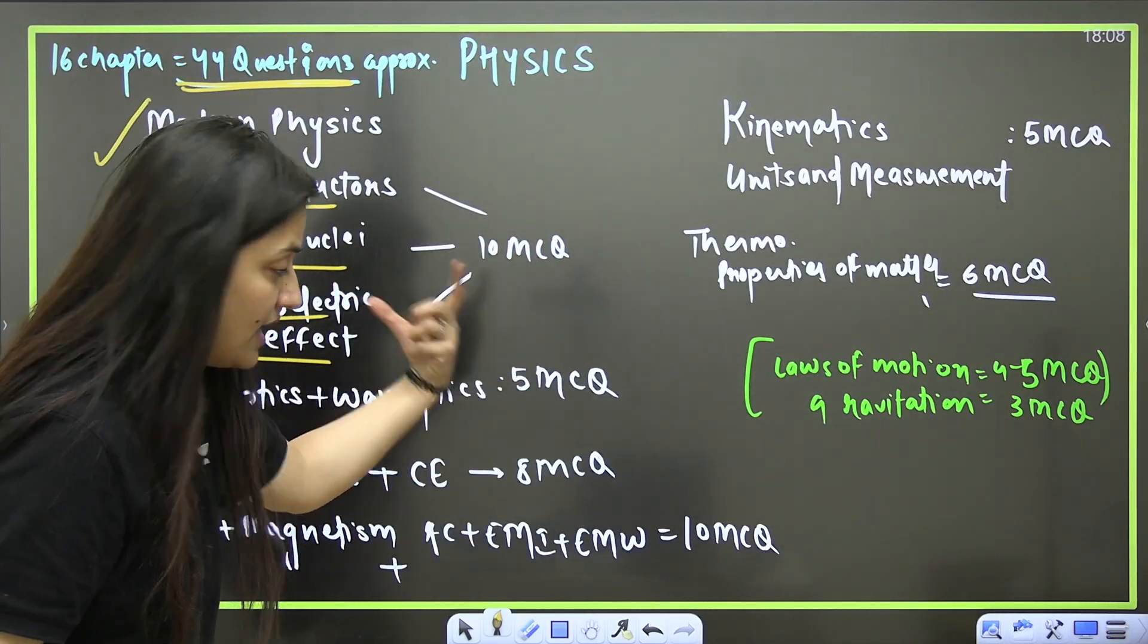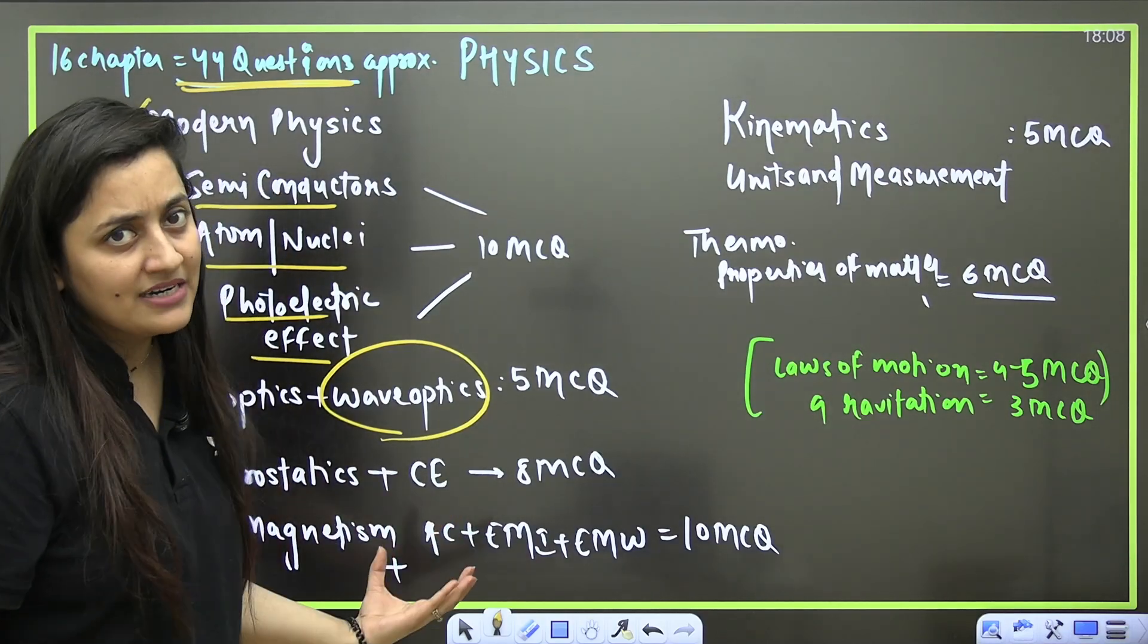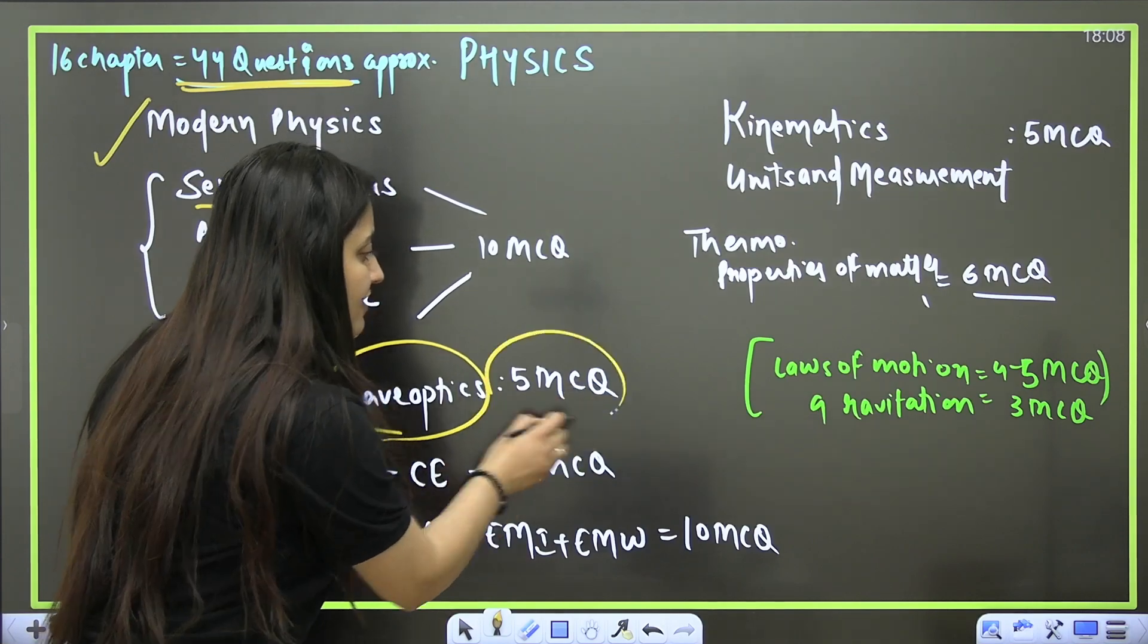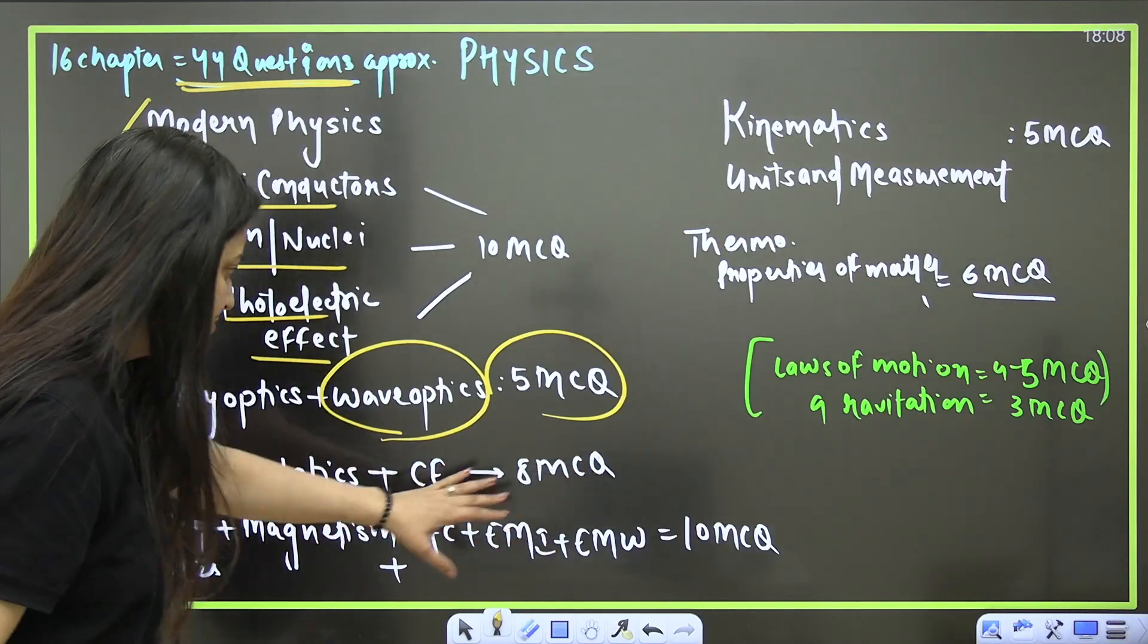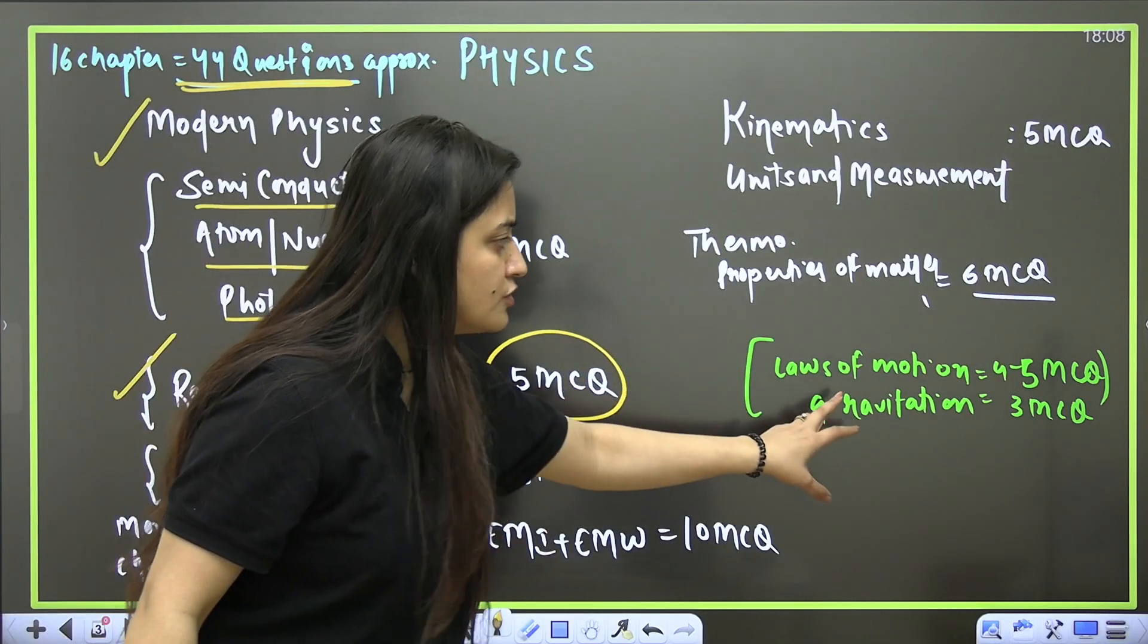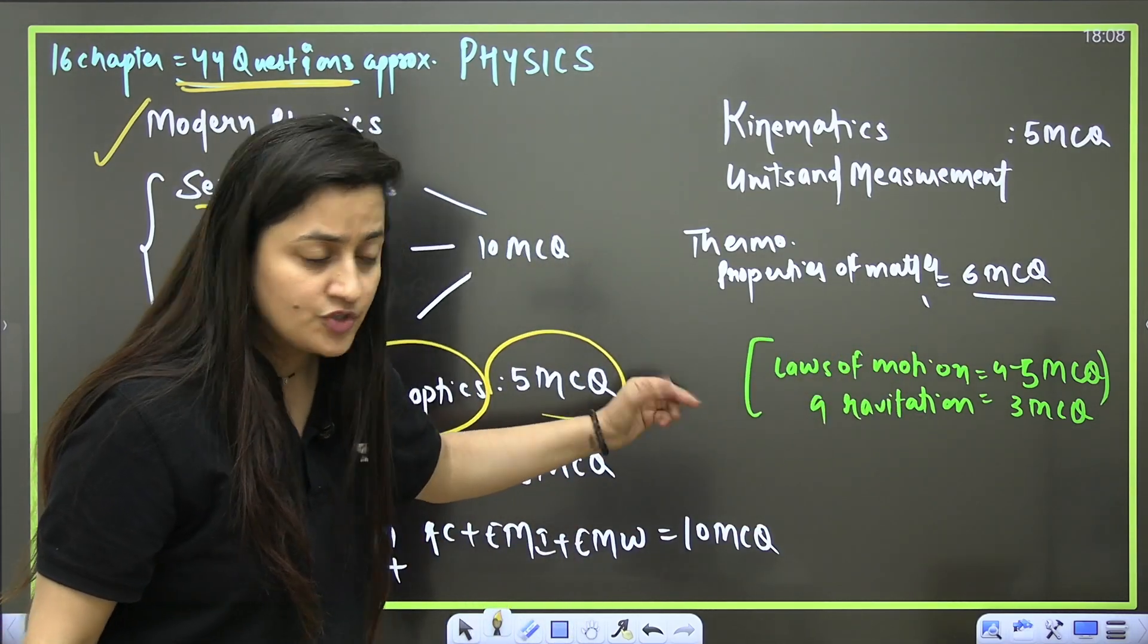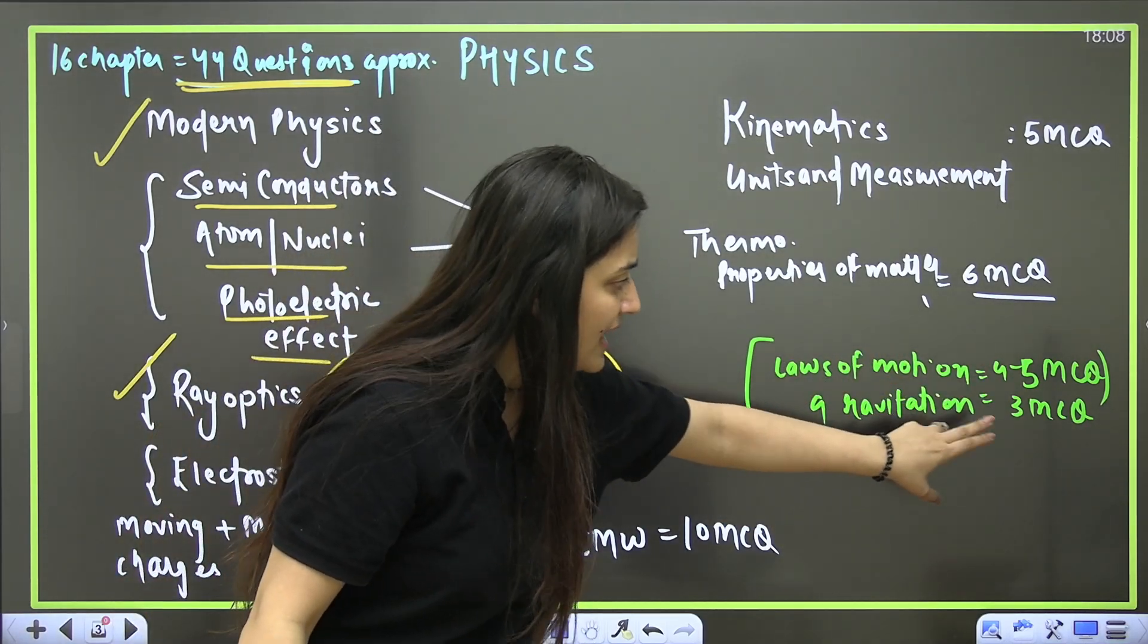Then ray optics and wave optics. Wave optics is comparatively easy, ray optics is a little bit complicated, but if you complete these two, five MCQs. Then electrostatics and current electricity, eight MCQs. To understand these chapters, laws of motion and gravitation you need to complete. You can get four to five questions from laws of motion and gravitation, three MCQs.